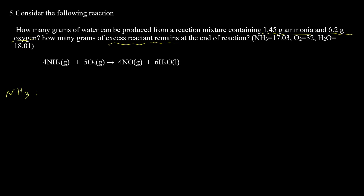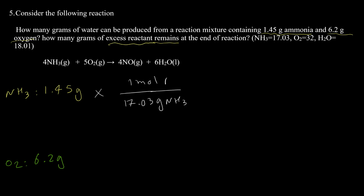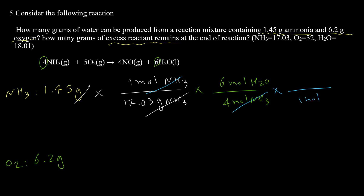We perform the calculation twice. Starting with ammonia: 1.45 g NH₃ × (1 mol / 17.03 g) × (6 mol H₂O / 4 mol NH₃) × (18.01 g / 1 mol H₂O) = 2.30 grams water. This is the product value when ammonia is used in the calculation.